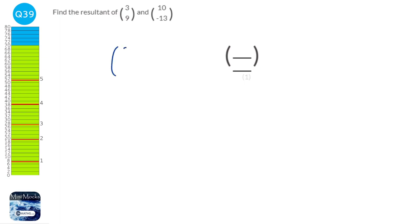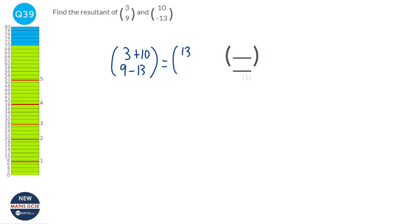With two vectors, we add the tops and add the bottoms. It's plus minus 13, so it's 9 take away 13. When we do that, we get 13 at the top and minus 4 at the bottom.